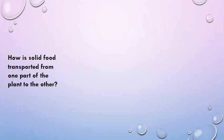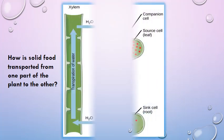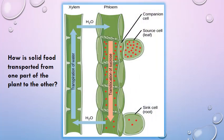Solid food has to be transported from one part of the plant to another. For this transportation, the plant has vessels present which are xylem and phloem vessels which transport food.